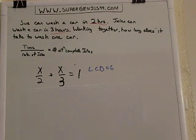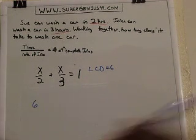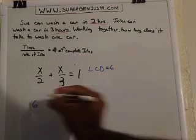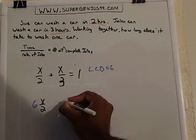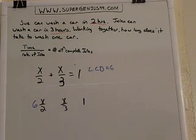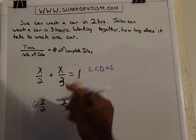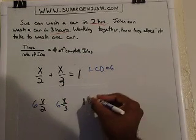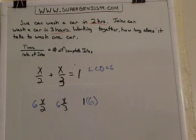So I need to multiply every term by the LCD, so that would be six times x over two, times six times x over three, equals six times one.